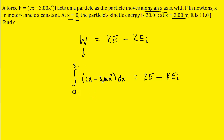We can go ahead and integrate the left-hand side of this equation. The variable here is x, not c. C is actually a constant, as stated in the question. So when we integrate cx, we get cx squared over two. And when we integrate 3x squared, we get 3x cubed over three — and of course those threes cancel, leaving us with just x cubed.